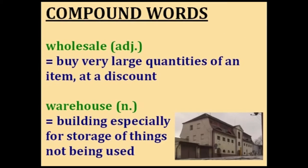Wholesale. Sometimes companies buy very large quantities of items from a manufacturer to get a discount — for example, 10,000 pairs of shoes at a reduced price. This is called buying wholesale, because they're going to sell those shoes for a profit. And if they buy so many items, they need to store them somewhere, so the items can be stored in a warehouse — a building used especially for storage of things not currently in use.